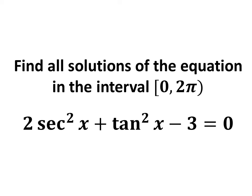In this video, we will learn to find solutions of the equation 2 times square of secant of x plus square of tangent of x minus 3 is equal to 0 in the interval 0 to 2 times pi.